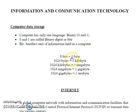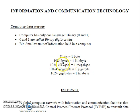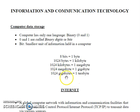Here we have discussed a conversion system starting from bits and how to go to higher memory sizes. So, 8 bits together constitute 1 byte. 1024 bytes together constitute 1 kilobyte, or KB in short. 1024 kilobytes equals 1 megabyte, or MB. 1024 megabytes equals 1 gigabyte, or GB, and 1024 gigabytes is equal to 1 terabyte, or TB in short.